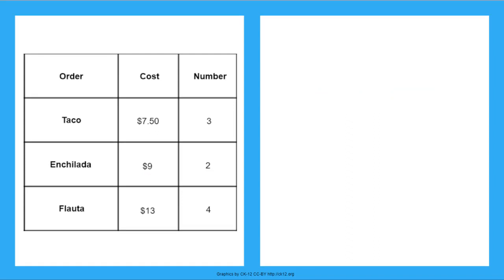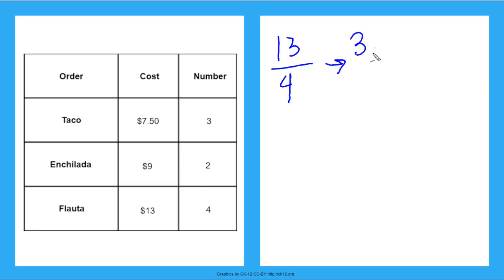Now for the flauta — it says I can get 4 flautas for $13, so I can write my rate as 13 over 4. Again, I need to get my unit rate, so I divide the numerator by the denominator and I get $3.25 over 1.